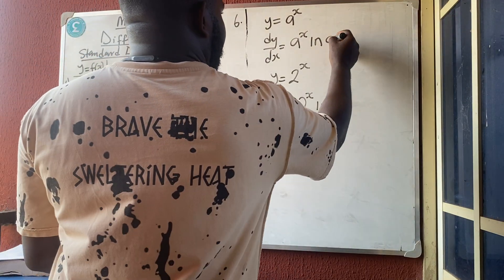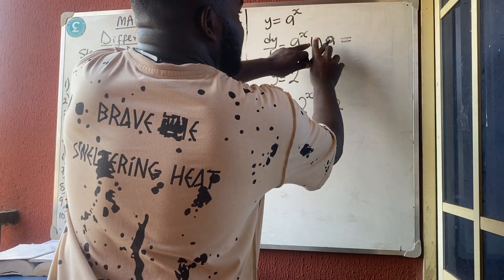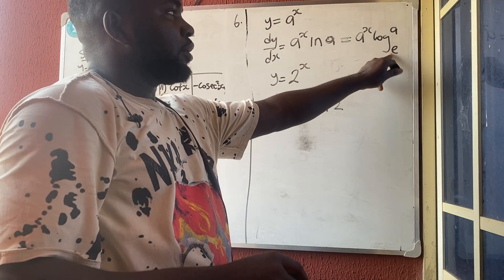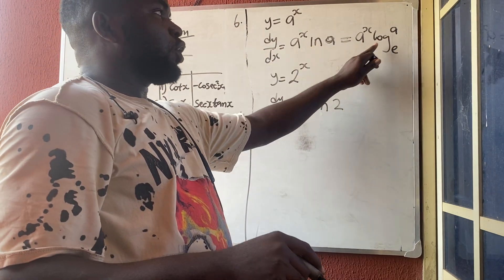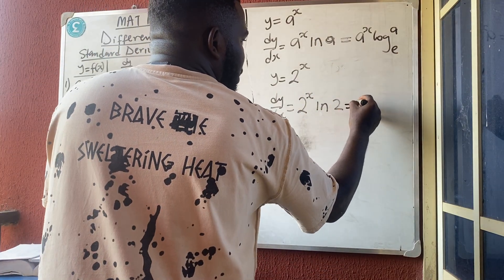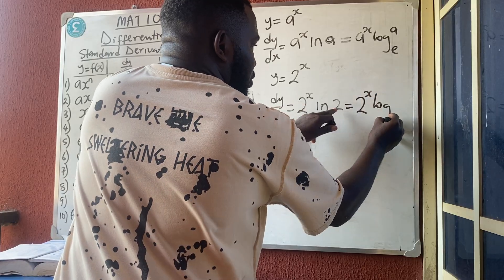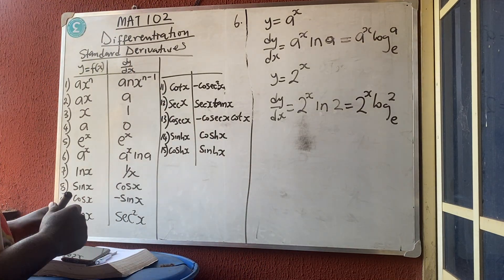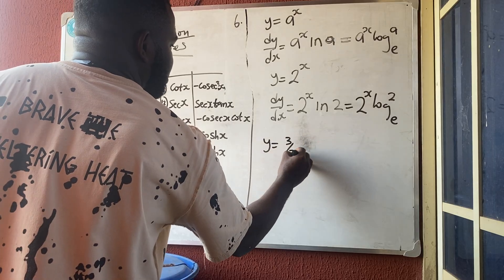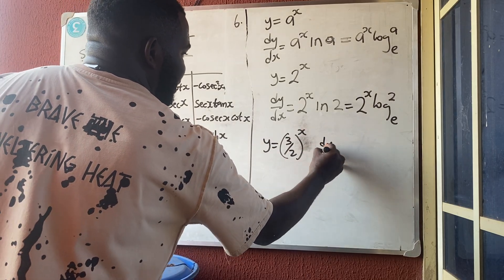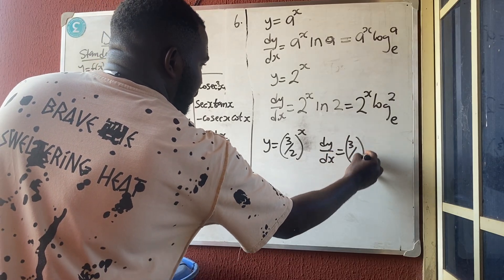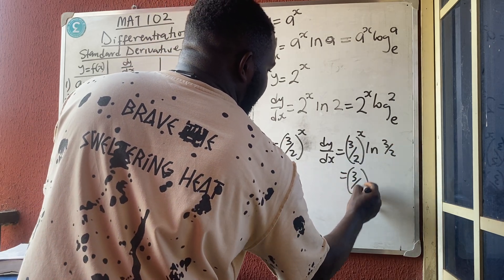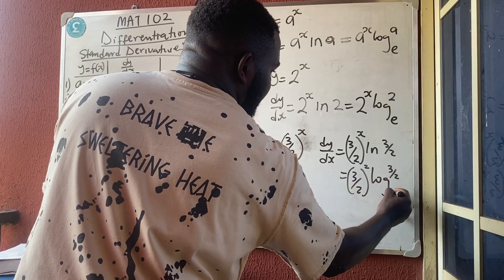So dy/dx = a^x · log_e(a) = a^x · ln(a). For example, if y = 2^x, then dy/dx = 2^x · ln(2). If y = (3/2)^x, then dy/dx = (3/2)^x · ln(3/2), or equivalently (3/2)^x · log_e(3/2). Both forms are the same.